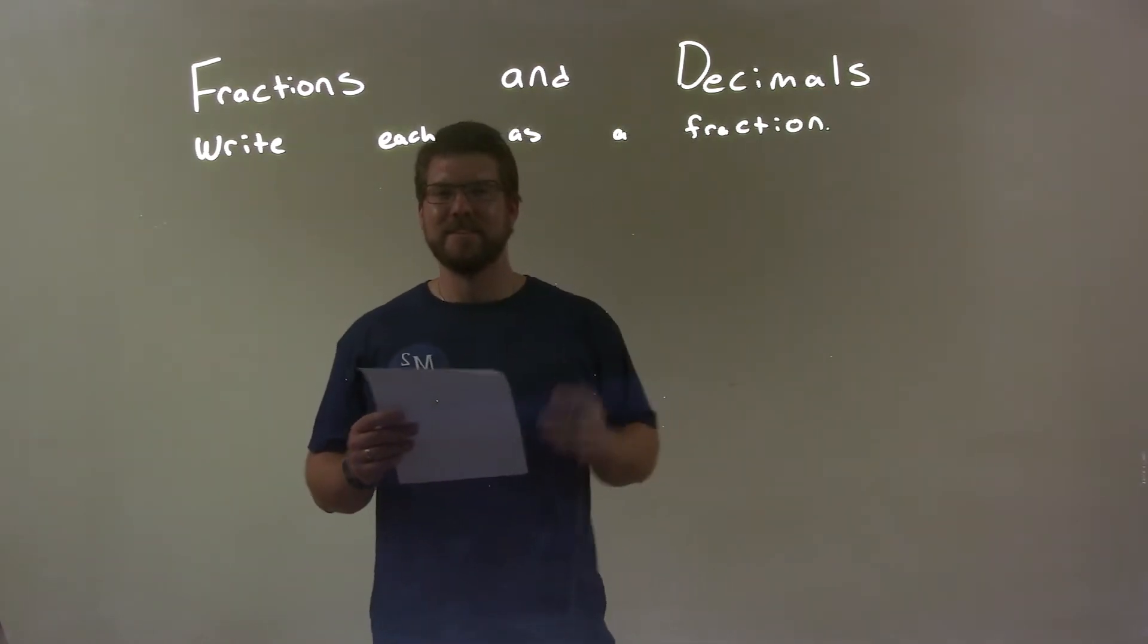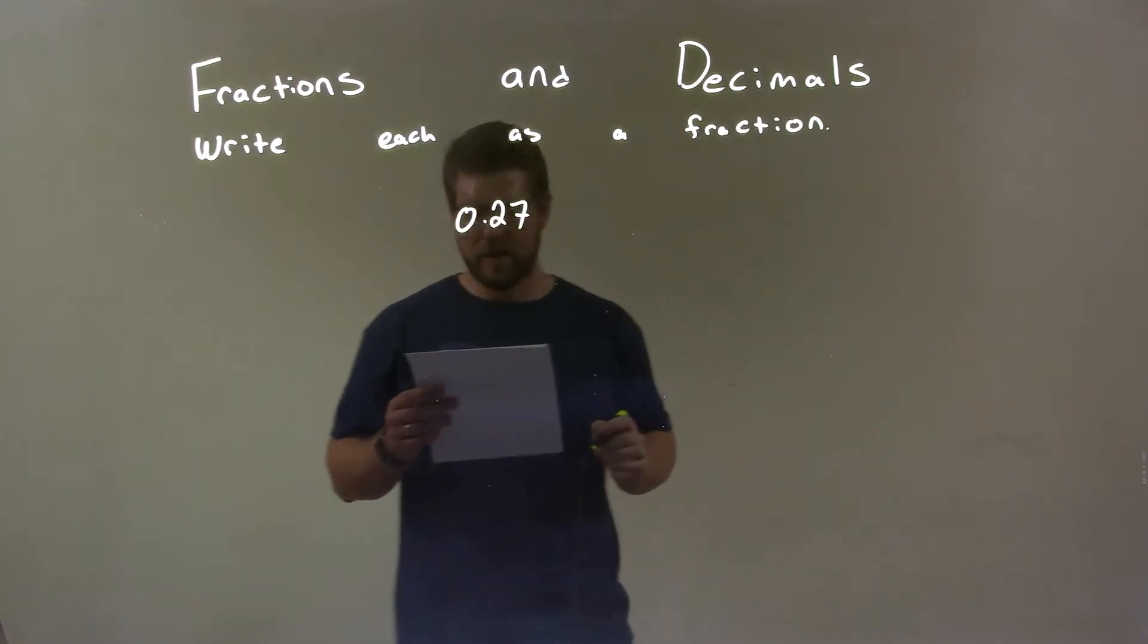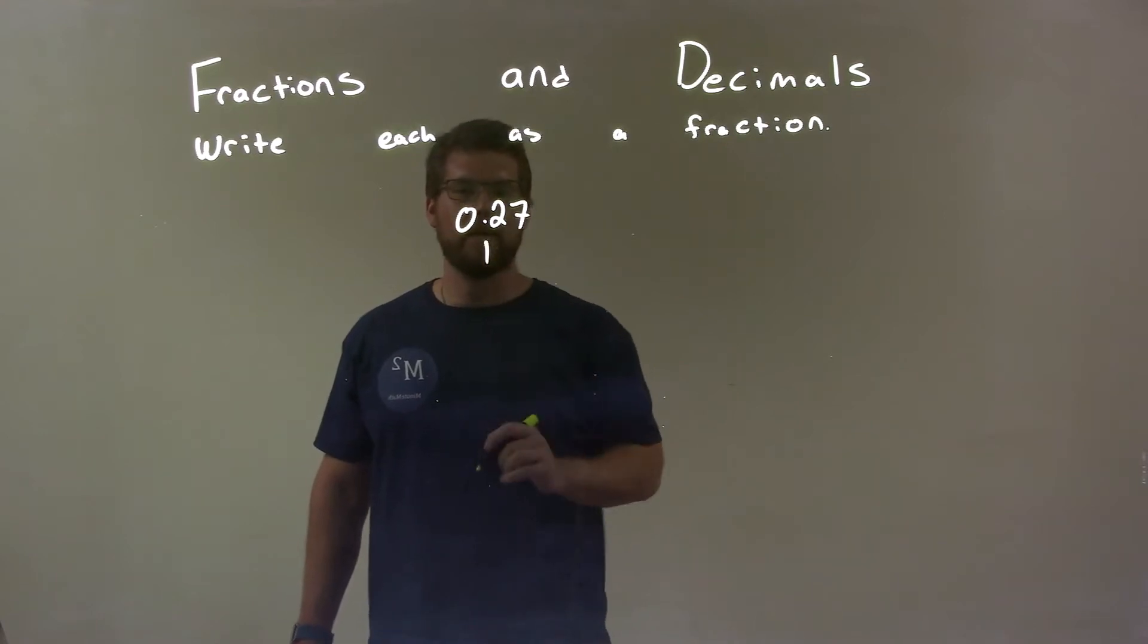So if I was given this decimal, 0.27... Well, 0.27, my little trick is I put a 1 where the decimal is and 0s for each one afterwards.